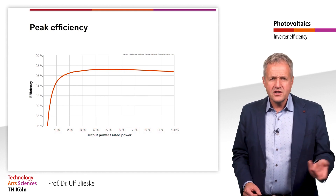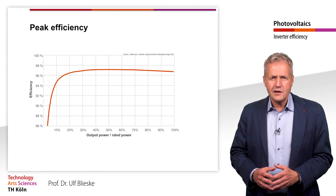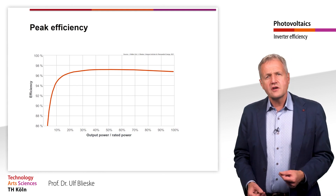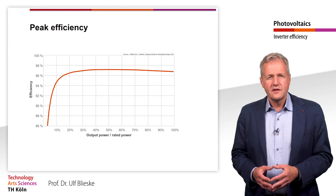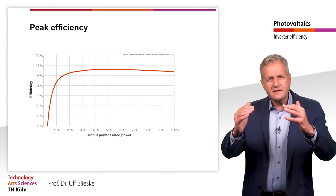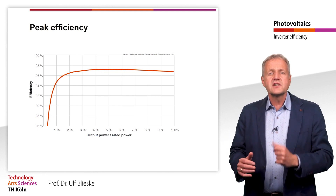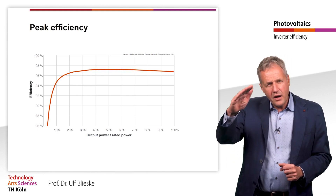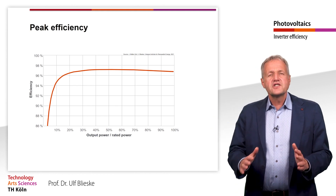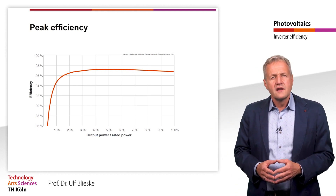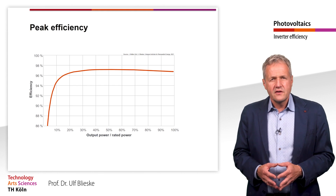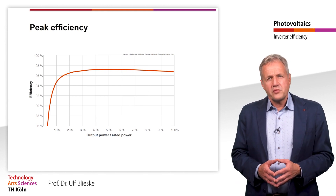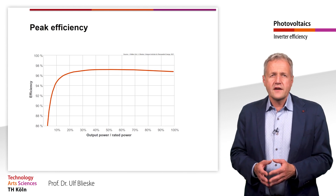At 50% it delivers only half of its rated power, and so on. It can be seen that the efficiency is very low at low power levels. This is mainly due to the self-consumption of the power electronics. As the power increases, the efficiency increases and reaches its maximum at about half the rated power. At higher input power, the efficiency drops again somewhat, due to ohmic losses which increase exponentially or squared with the power.